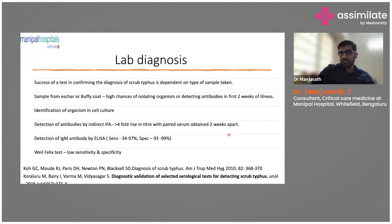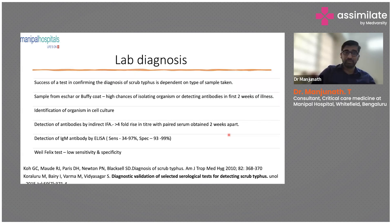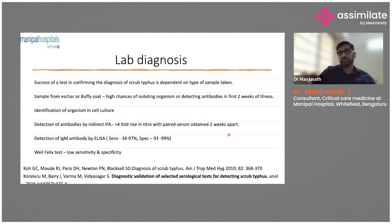Lab diagnosis success depends on the type of sample sent and on a clear history including onset of fever. If the patient has an eschar, take a biopsy from it — there are high chances of isolating scrub typhus from there. Detecting antibodies in the first two weeks of illness and identifying the organism in cell culture are also possible but really difficult.